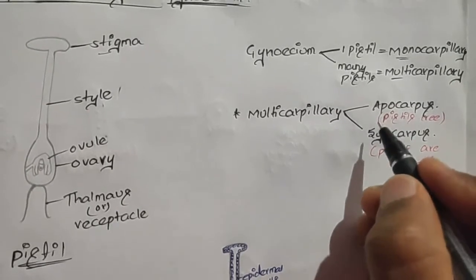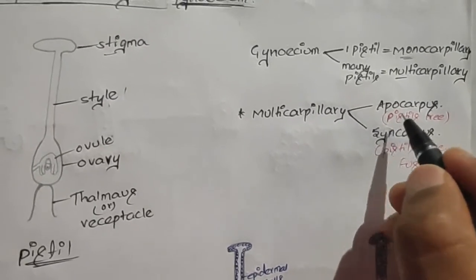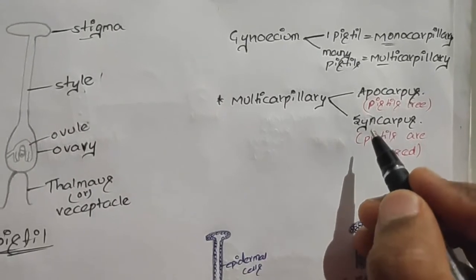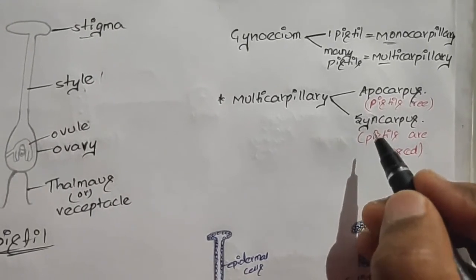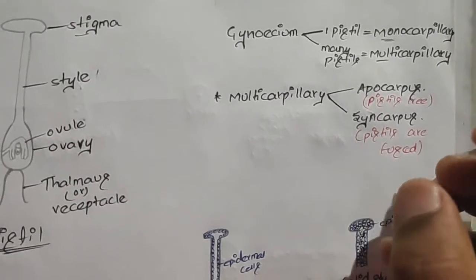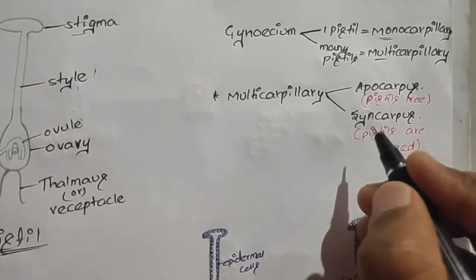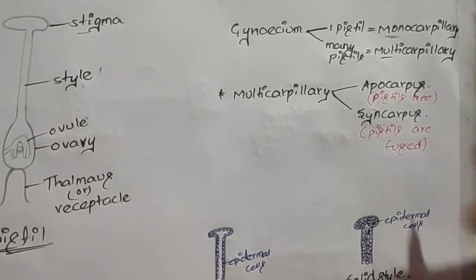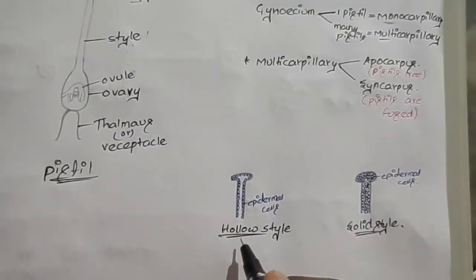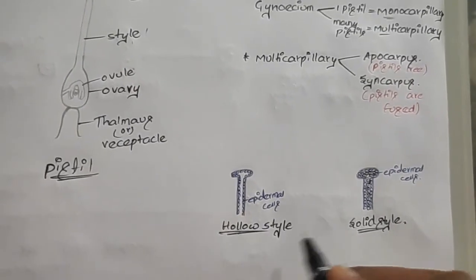All free pistils are known as apocarpous. In multicarpillary flowers where all the pistils are grouped or fused together, such type are known as syncarpous. The style is of two types: hollow style and solid style.